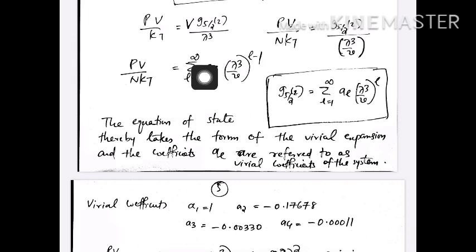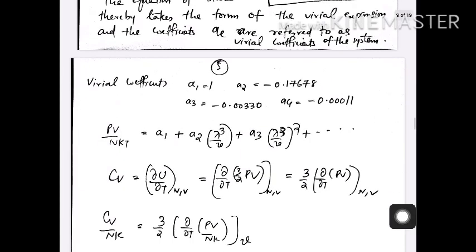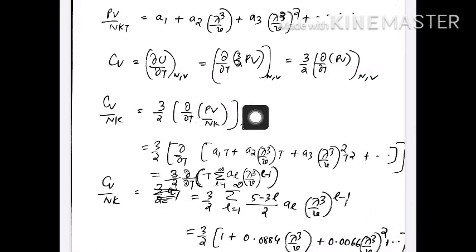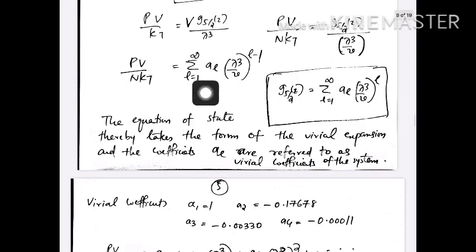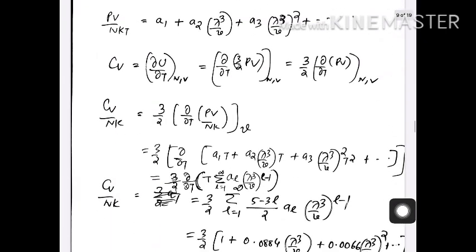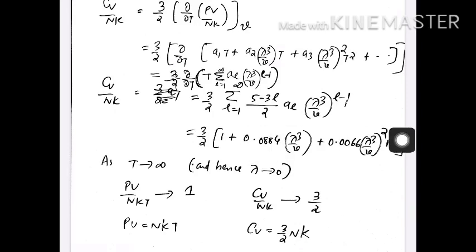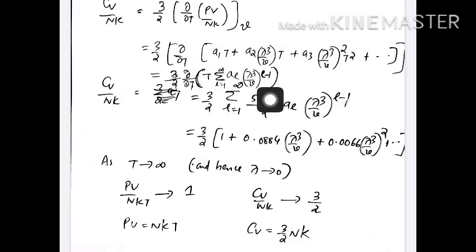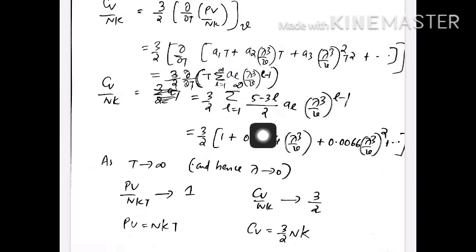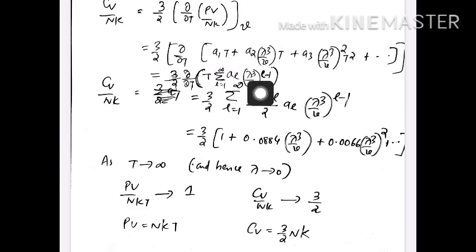We know pV/NkT equals sigma l equal to 1 to infinity a_l λ³/V^(l−1). Substituting, pV/Nk will be T times this expression. So we get (3/2) ∂/∂T of T times sigma l equal to 1 to infinity a_l λ³/V^(l−1). We have to differentiate with respect to temperature and apply the product rule because we have T explicitly and T also appears inside λ³.